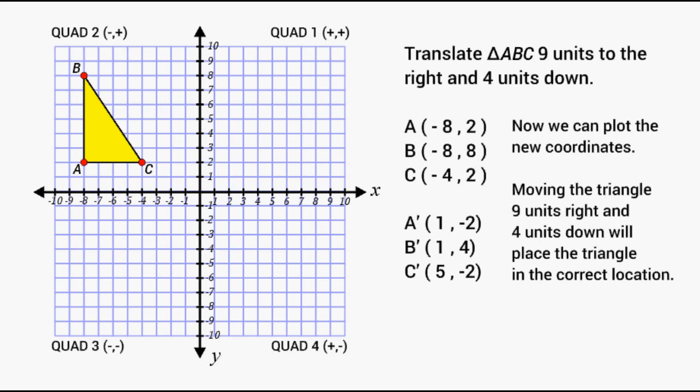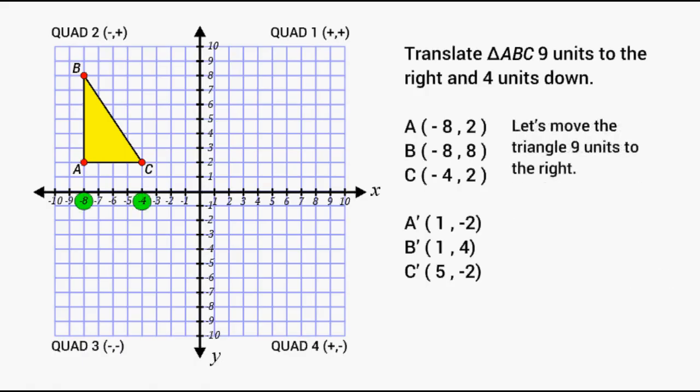So what we're going to do is take our object and slide it over 9 units to the right. And then we're going to slide it 4 units down just to show it will end up in the coordinates that we came up with.